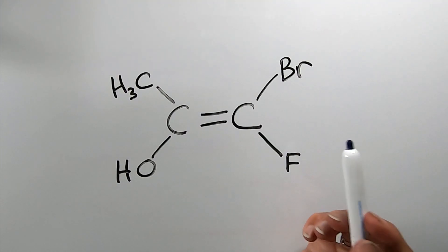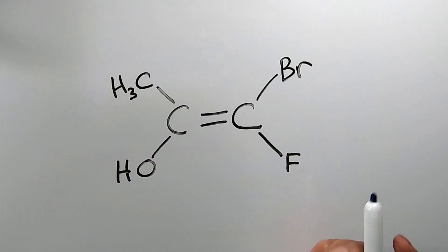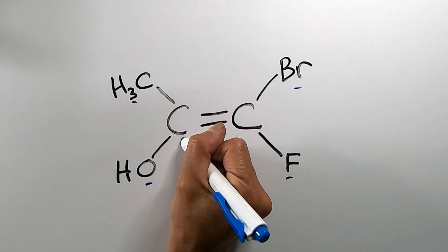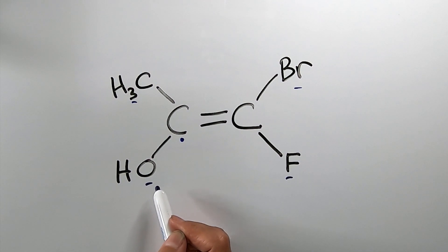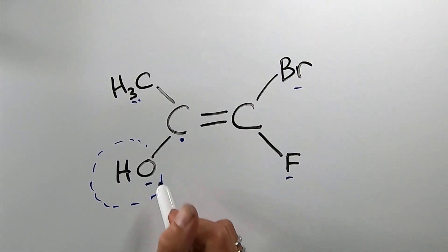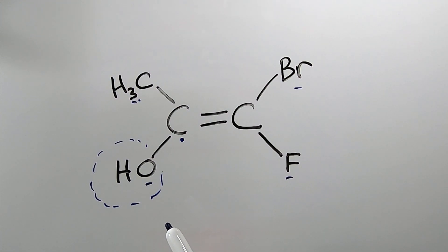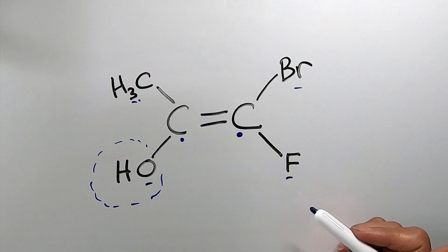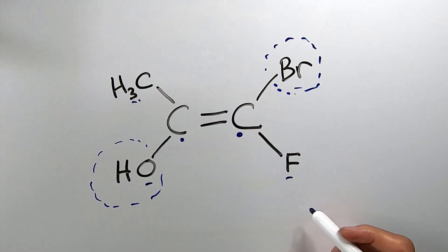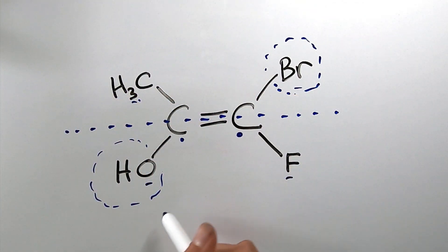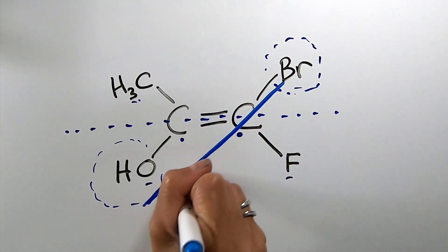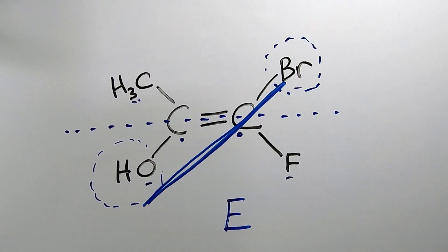Here's another example of a geometric isomer with double-bonded carbons, similar to the one before. However, there are four different substituents, which means we're going to be using EZ configuration nomenclature. Just like before, I look at the left side carbon and determine priority among its substituents. We have an oxygen compared to a carbon — oxygen has a greater atomic number, therefore greater electron cloud density, so it gets priority. Then looking at the right side carbon, bromine has a greater atomic number than fluorine, therefore a greater electron cloud, so bromine gets priority on the right side. Looking across the plane of the double bond, the two priority substituents are on opposite sides, which means this is E configuration. We use E instead of trans because it has four different substituents.